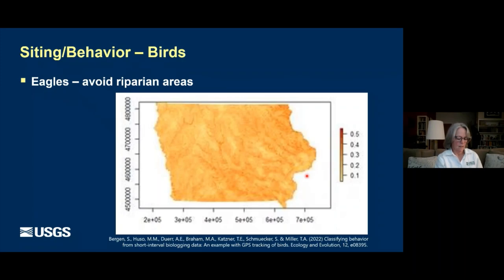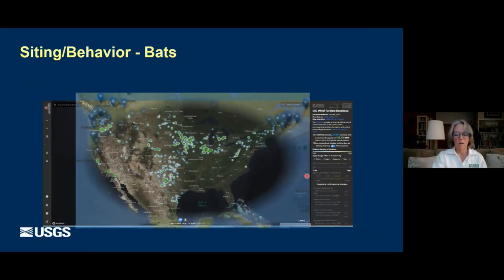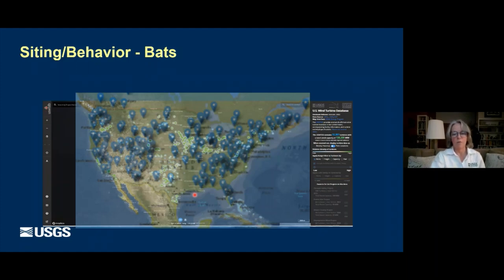For bats, several U.S. agencies have collaborated with state and provincial agencies and academics to develop a statistically based sampling network to sample bats throughout North America, primarily done with acoustic sampling. The network is becoming much more extensive as it grows. We can superimpose this network on the turbine database and see that there are a few gaps in the monitoring network where there are some pretty heavy build-outs of turbines. They are working to make that coverage even more dense, which could be very useful for future siting.